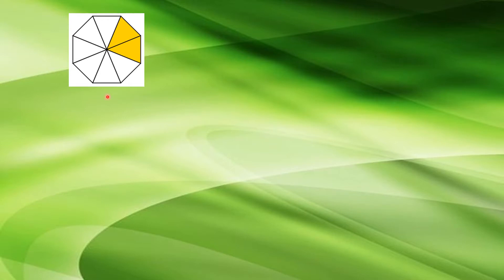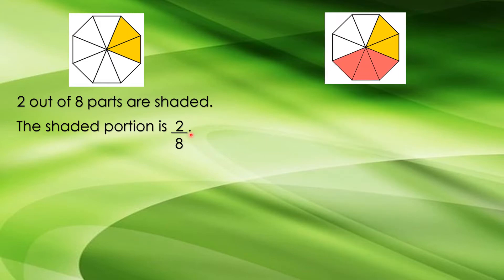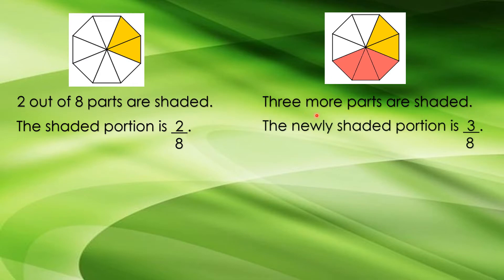Look at this fraction. 2 out of 8 parts are shaded. The shaded portion is 2 eighths. Then, 3 more parts are shaded.